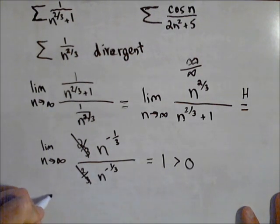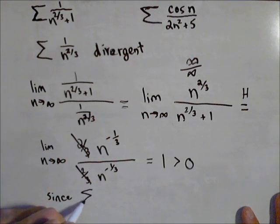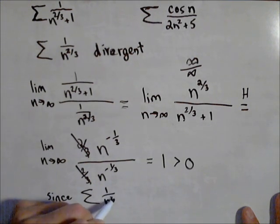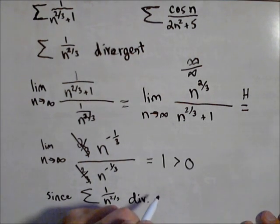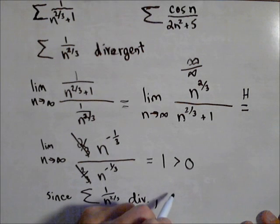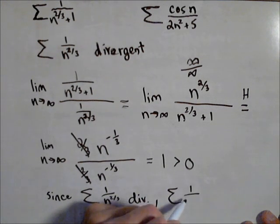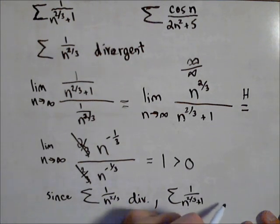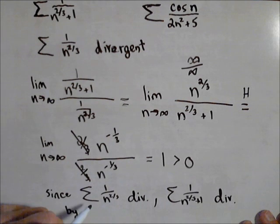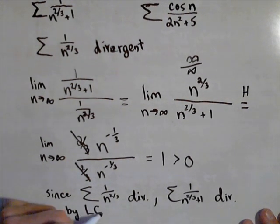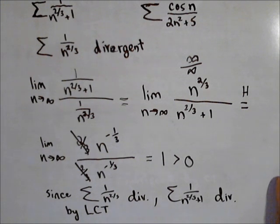So we could say since 1/n^(2/3) diverges, then 1/(n^(2/3) + 1) diverges by limit comparison test. And you'll notice I use a lot of abbreviations when I do these. So that's how the limit comparison test is used.